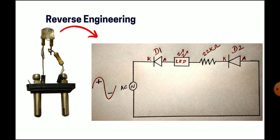For the AC input, which is given to one diode — the cathode terminal — the anode terminal is given to the LED. The LED's other terminal is given to the 22 kilo ohm resistor, which is used to limit the flow of current. The other terminal of the 22 kilo ohm resistor is given to the cathode of diode D2. The D2 diode's anode section is given to the AC input. So this is the circuit diagram.